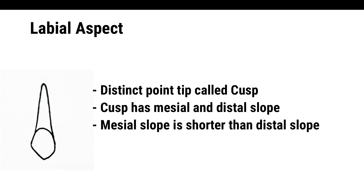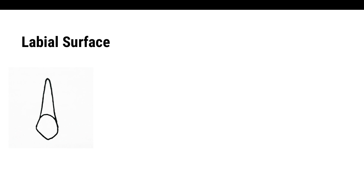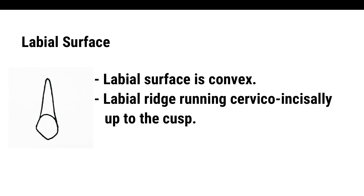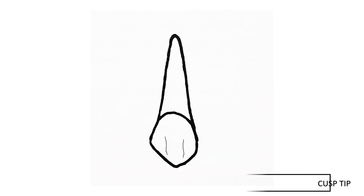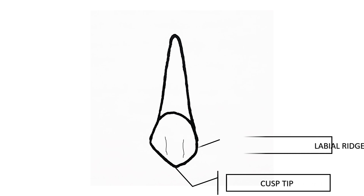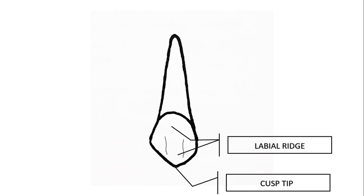The incisal edge in canines is divided into two parts: mesial slope and distal slope meeting at an angle to form a point called the cusp. The distal slope of the cusp is longer than the mesial cusp slope. The labial surface is convex; the middle labial lobe is well developed, forming a prominent labial ridge running cervico-incisally up to the cusp. On either side of the labial ridge, shallow depressions divide the labial aspect into mesial, middle, and distal lobes.